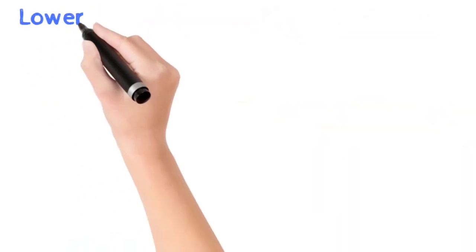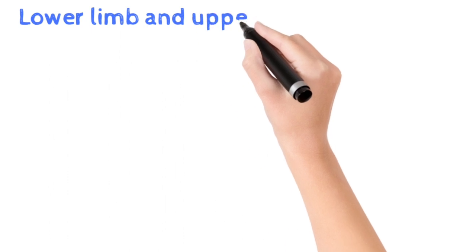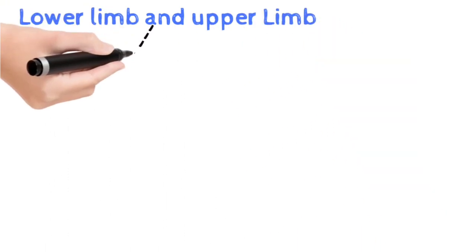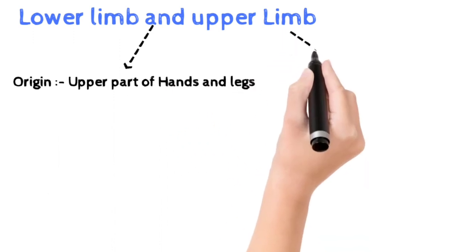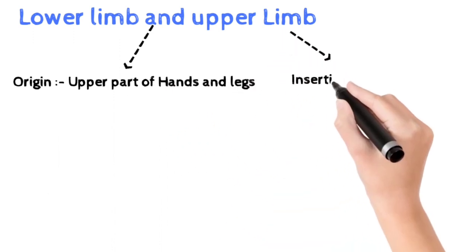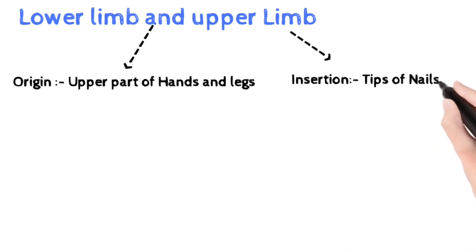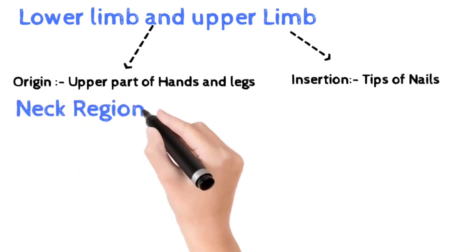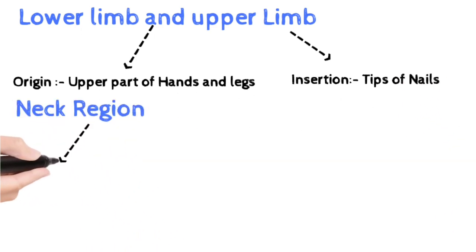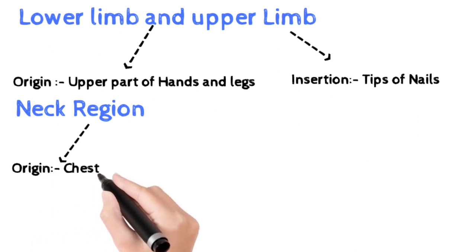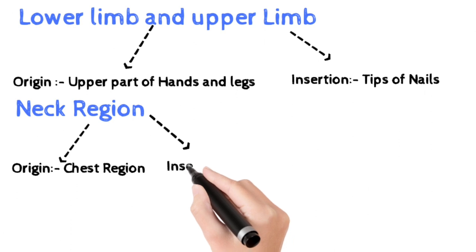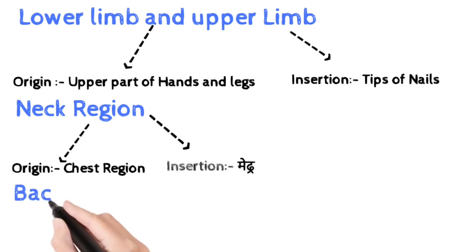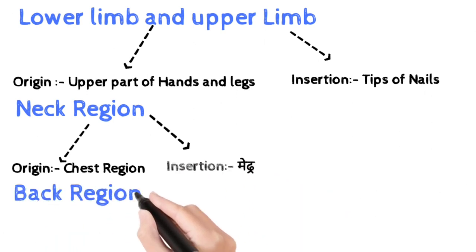The origin insertion, remember the lower limb and upper limb. Its origin is the upper part of hands and legs. The insertion is the tips of nails. The neck region origin is the chest region. The insertion is the middle part of the neck region. And the back region origin is the middle part of it, and the insertion is the pelvic region.